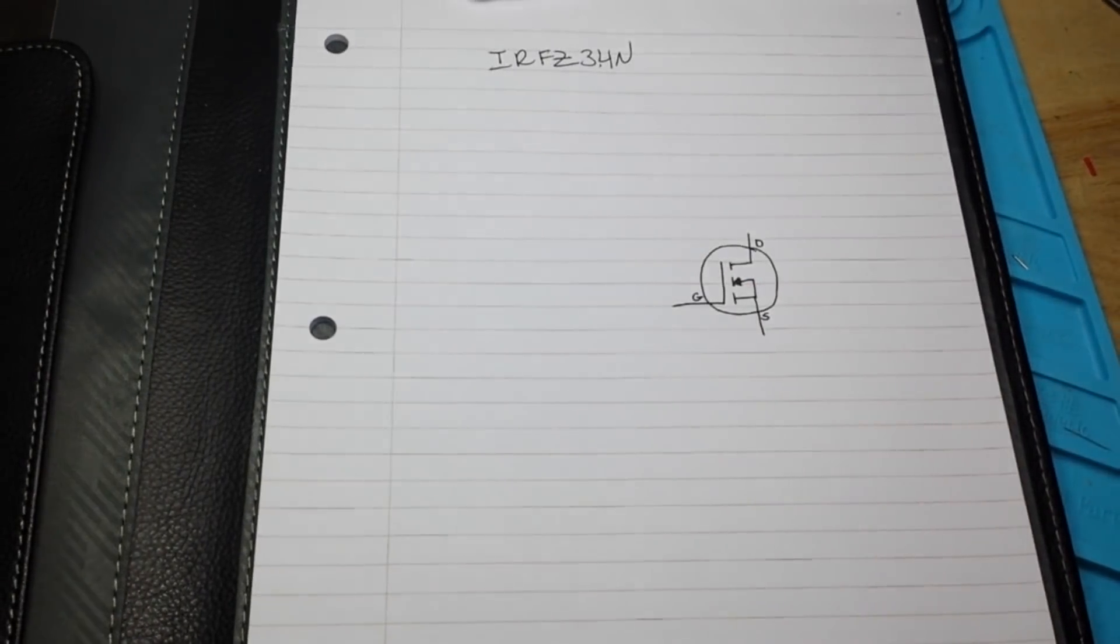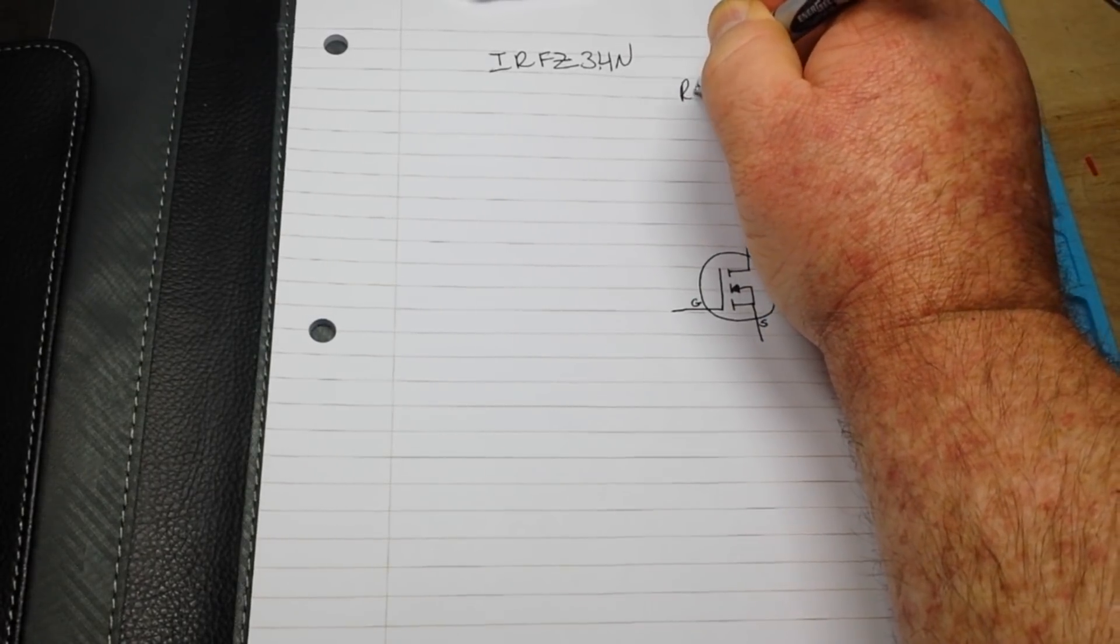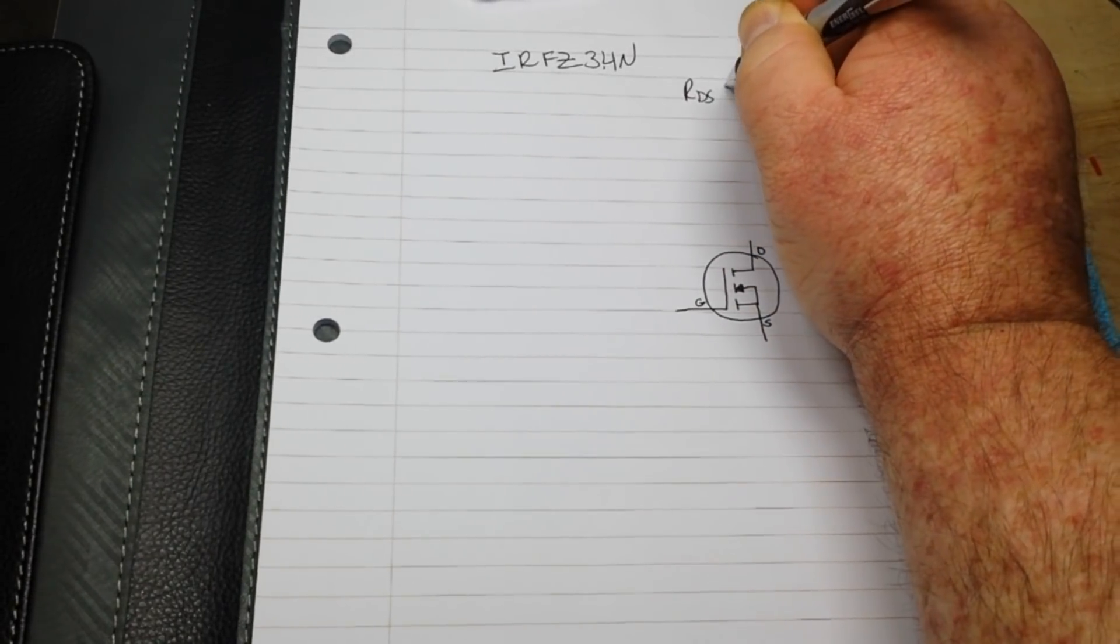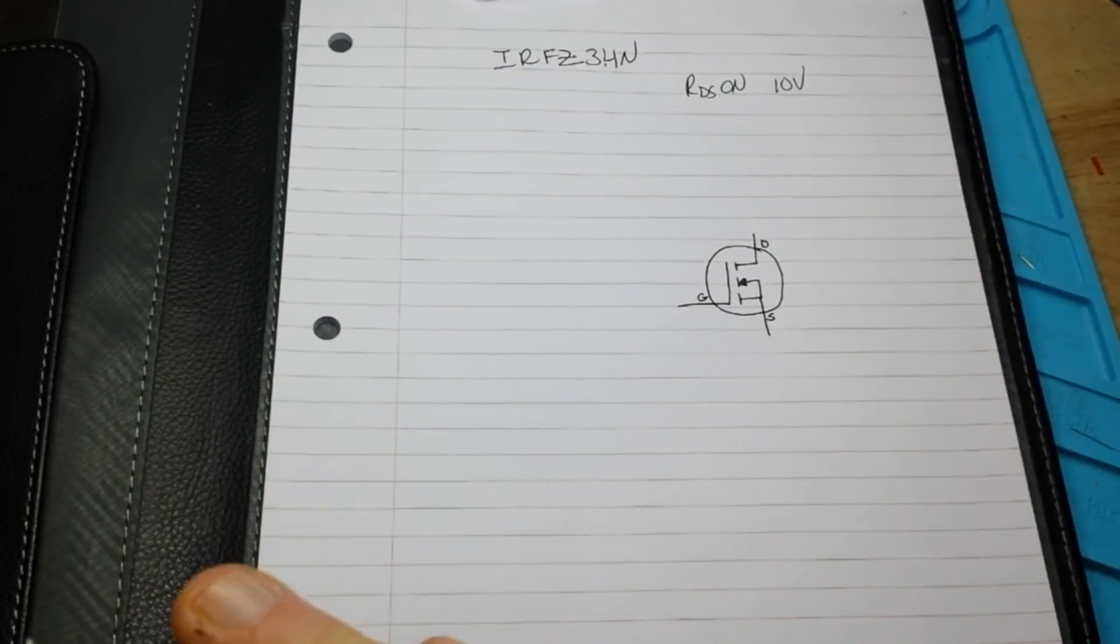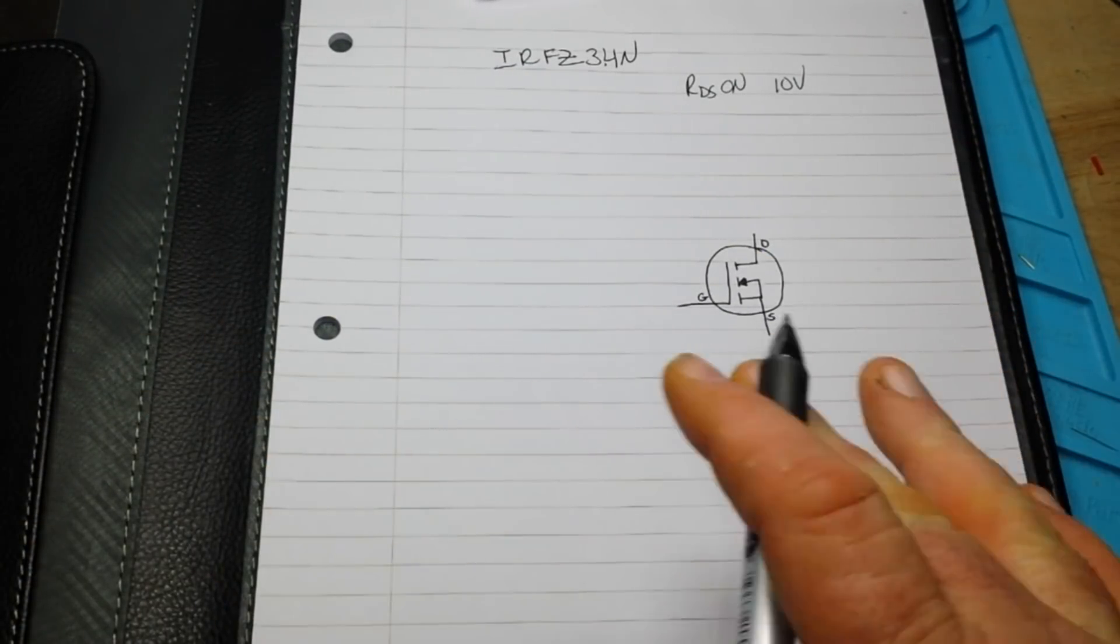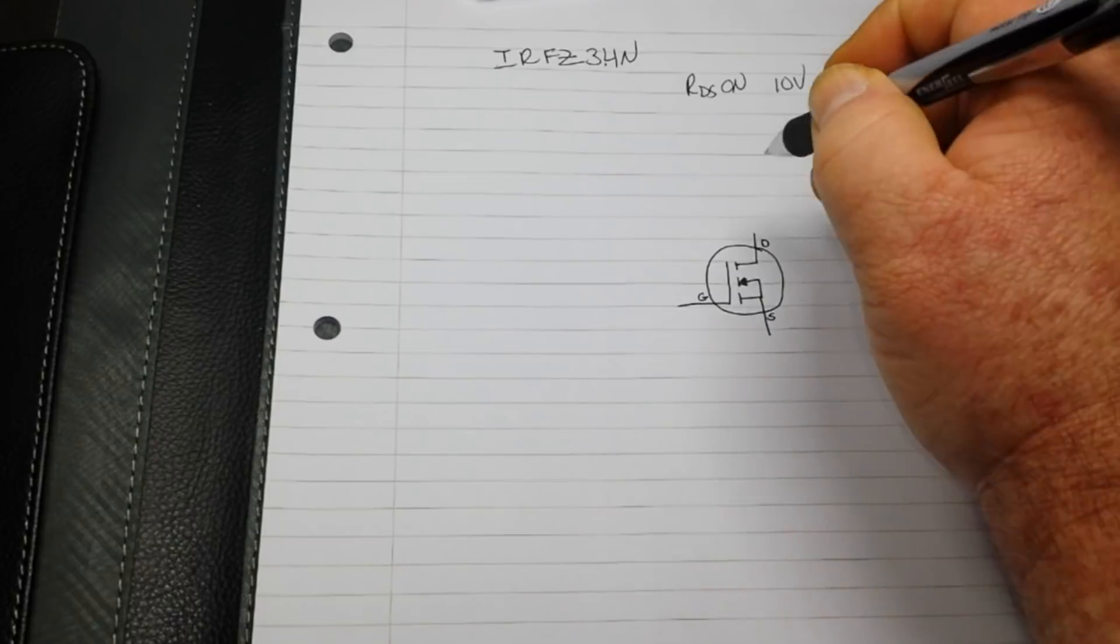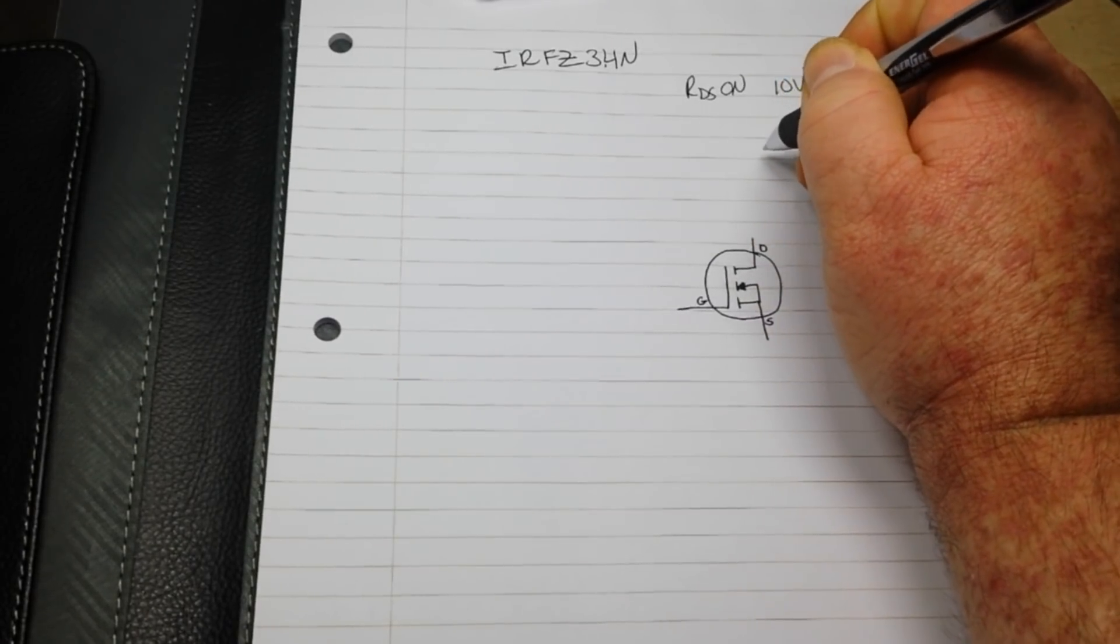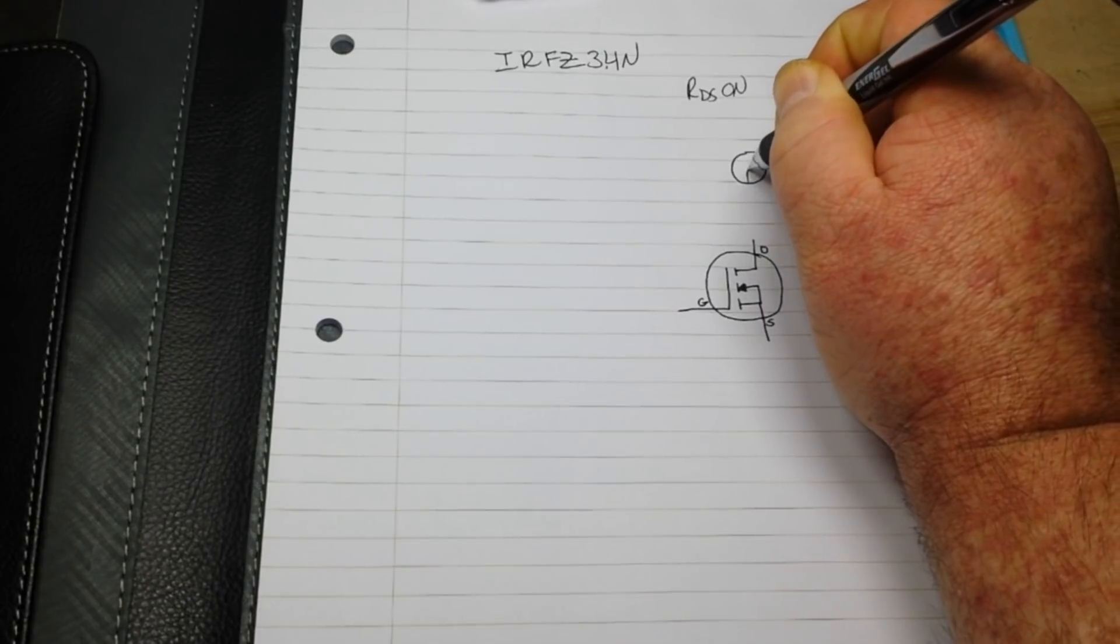today we're going to look at a simple circuit using a power MOSFET, in this case it's the IRFC34N which has an RDS on of 10 volts. So that means this thing will totally turn on at 10 volts. What we're going to do is we're going to make kind of a DC linear dimmer. I mean that's what the circuit is going to do.